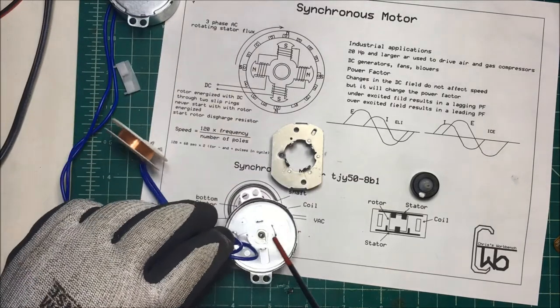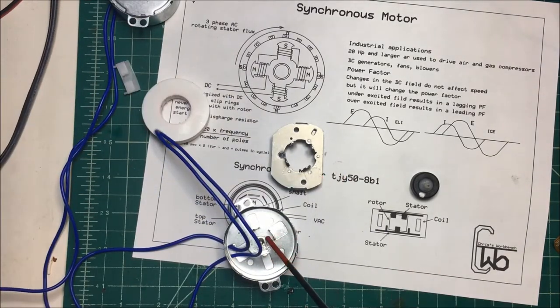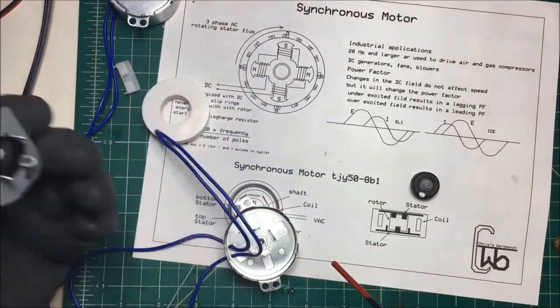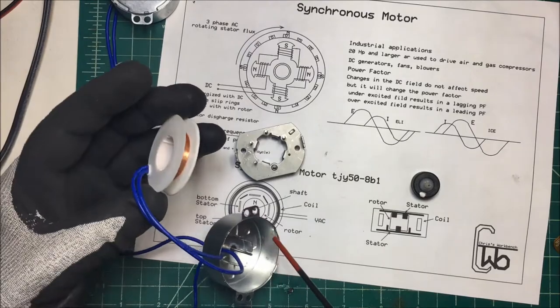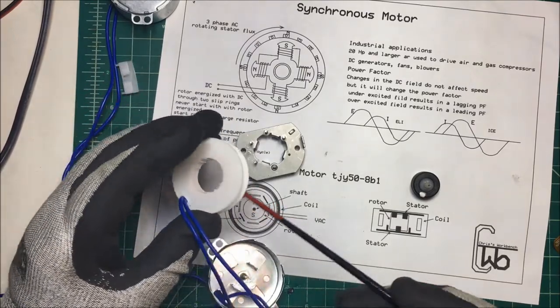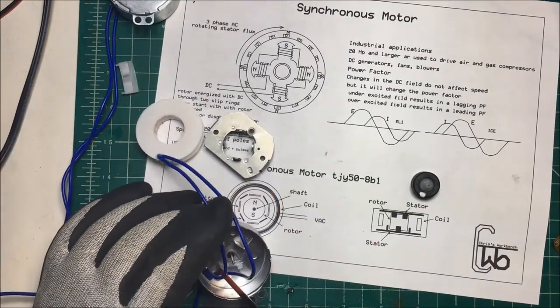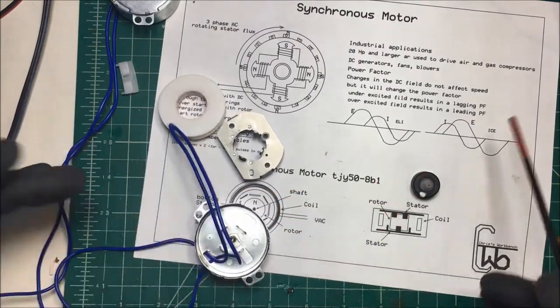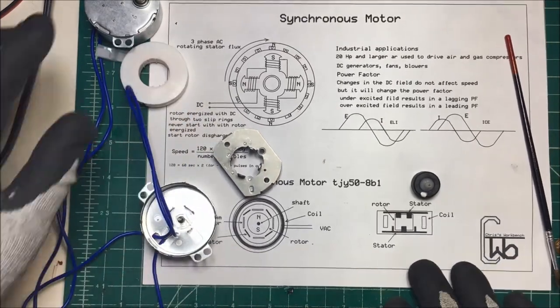They're just sitting in there alternating north and south back and forth. So very simple design. That's all there is to these little cheap synchronous motors. Just one coil, but this field just changes north and south. These are the poles here. They have a set here and a set inside, and that's all it needs to make that thing work.